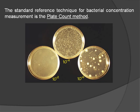Serial dilutions of the sample under test are made using a saline buffer solution, and 100 microliters of the diluted samples are inoculated on the petri dishes, which are then incubated at a temperature favoring bacterial growth. After incubation, the number of colonies grown on the petri dish are counted and the bacterial concentration is calculated.